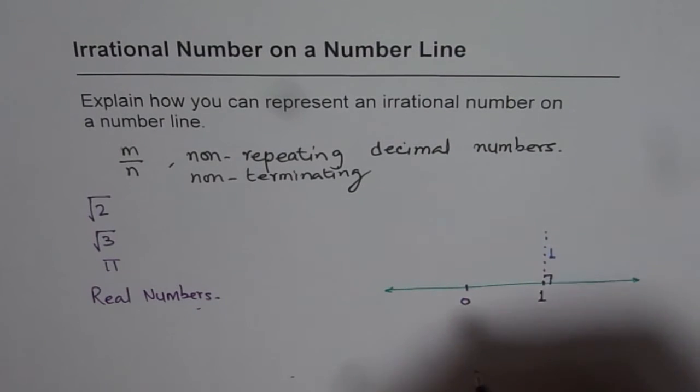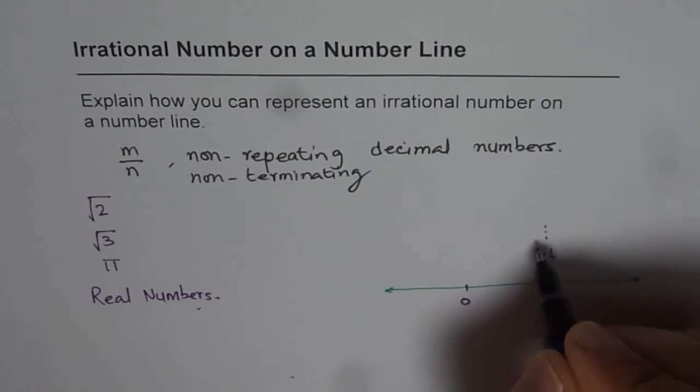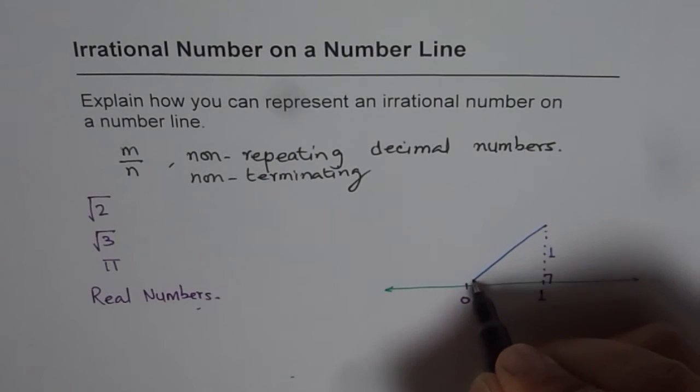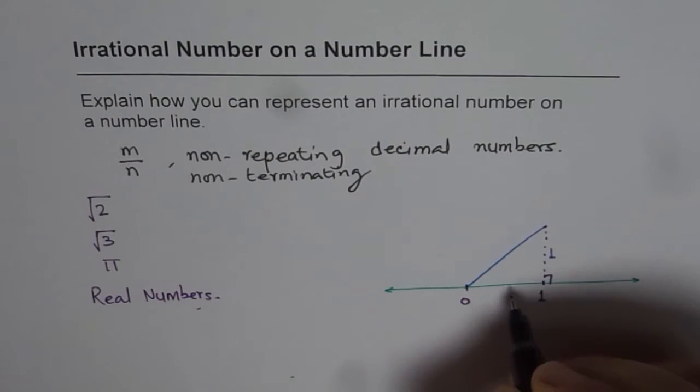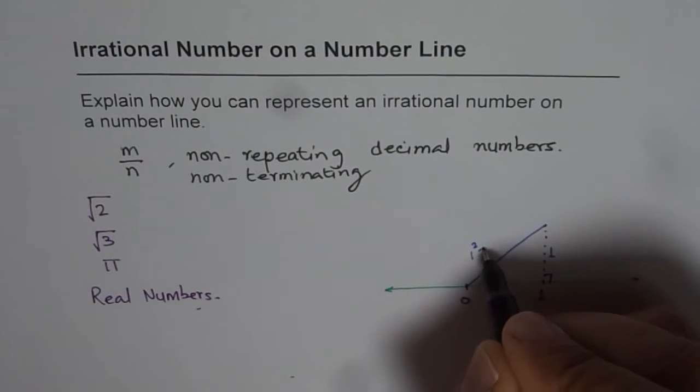So if I have 1 unit horizontally and 1 unit vertically, which is at right angles, in that case, what is the length of the diagonal? The diagonal length will be 1 square plus 1 square square root.